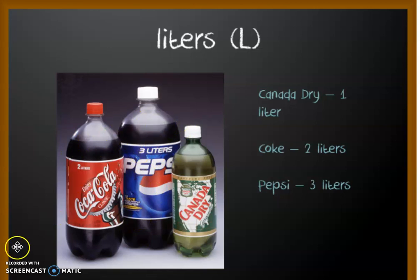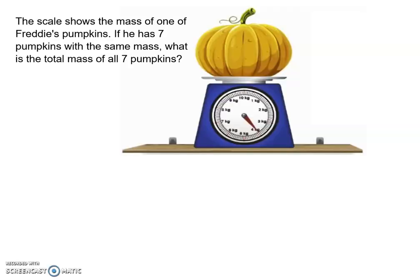So let's look at some word problems then with mass and liquid volume. Okay, so this first problem says the scale shows the mass of one of Freddy's pumpkins. If he has seven pumpkins with the same mass, what is the total mass of all seven pumpkins? So let's look at the scale and let's read the problem again. The scale shows the mass of one of Freddy's pumpkins. So let's look at the scale. One pumpkin is measured here on this scale, the mass of one pumpkin.